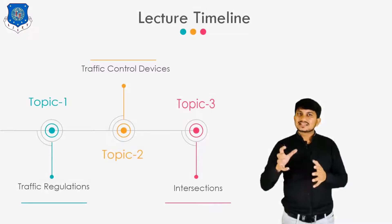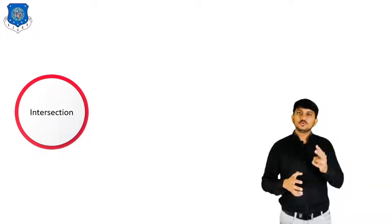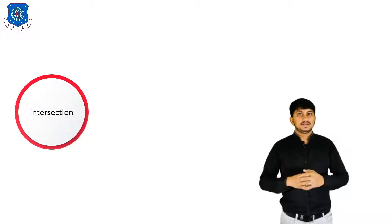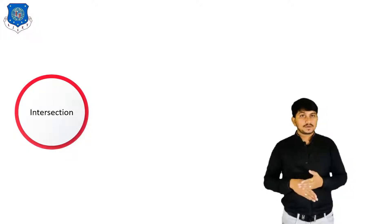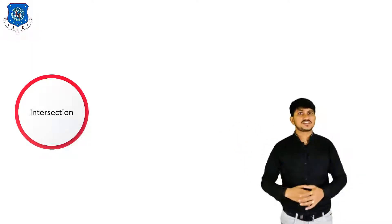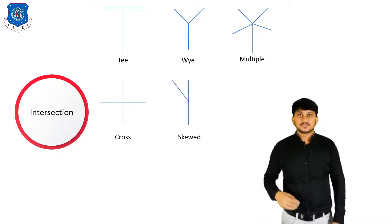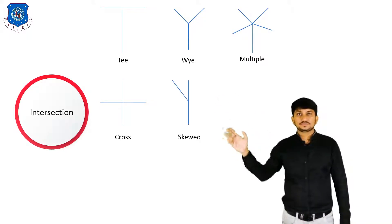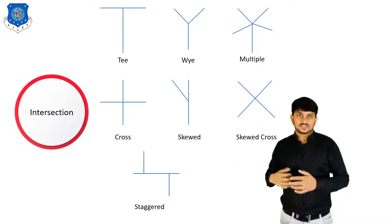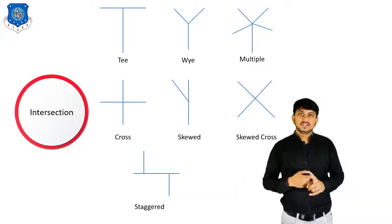Now let's discuss the last topic of today's lecture which is Intersection. An intersection is defined as the general area where two or more highways join or cross, within which are included the roadway and roadside facilities for traffic movement in that area. The efficiency, safety, speed, cost of operation, and capacity of a road system very much depend on intersection design. Various forms of intersections are T intersection, Y intersection, multiple intersection, cross intersection, and skewed intersection where one inclined road is connected with the main road. Skewed cross intersection is the combination of cross and skewed. Staggered is different from cross intersection as in a cross road all roads connect at one point, while in staggered it is not connected at one point but in a staggered or uneven manner. The last is queue staggered intersection which is the combination of staggered and skewed.